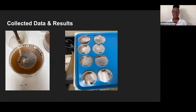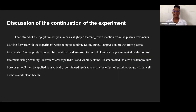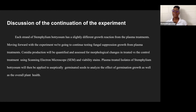These are more results we collected. A couple were contaminated and we need to determine if that was due to the voltage or human error. For discussion, each strain of Stemphylium botryosum had a slightly different growth reaction from the plasma treatment. Moving forward, we're going to continue testing the fungal suppression growth from plasma treatments. Conidia production will be quantified and assessed for morphological changes in treated versus control using the scanning electron microscope. Plasma treated isolates will then be applied to germinated seeds to analyze the effects on germination growth and overall plant health.